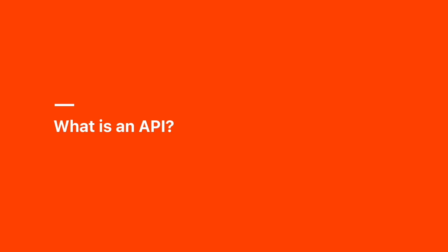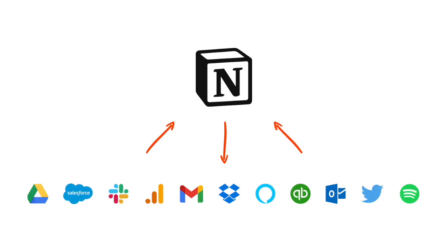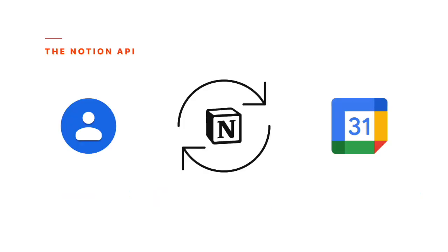So what's an API? An application programming interface, or API, allows apps to interact. The integrated apps can exchange information and make updates to one another. One common example is a synced contact list. Adding, modifying, or deleting a contact in Google Contacts can make the same change in your contacts database in Notion. And conversely, if you update your contacts database, Google Contacts will reflect that change. You can do the same with calendar events, among many other types of information from various apps.